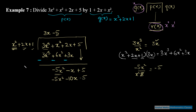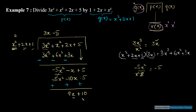अब remainder की degree check करें: यहाँ x की degree 1 है और divisor की degree 2 है। Divisor की degree बड़ी है, तो आगे नहीं जाएगा। यह मेरा final remainder है। तो quotient q(x) = 3x - 5 और remainder r(x) = 9x + 10।